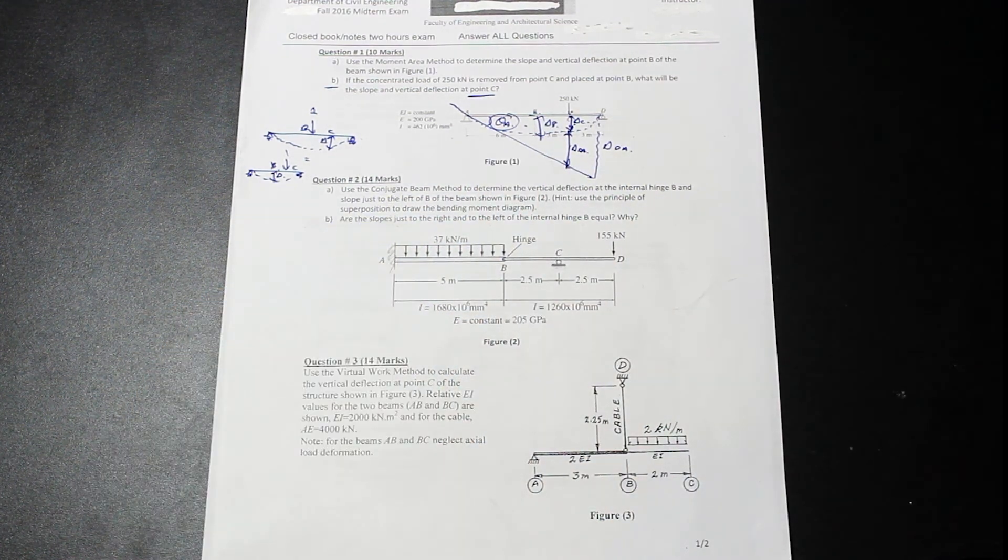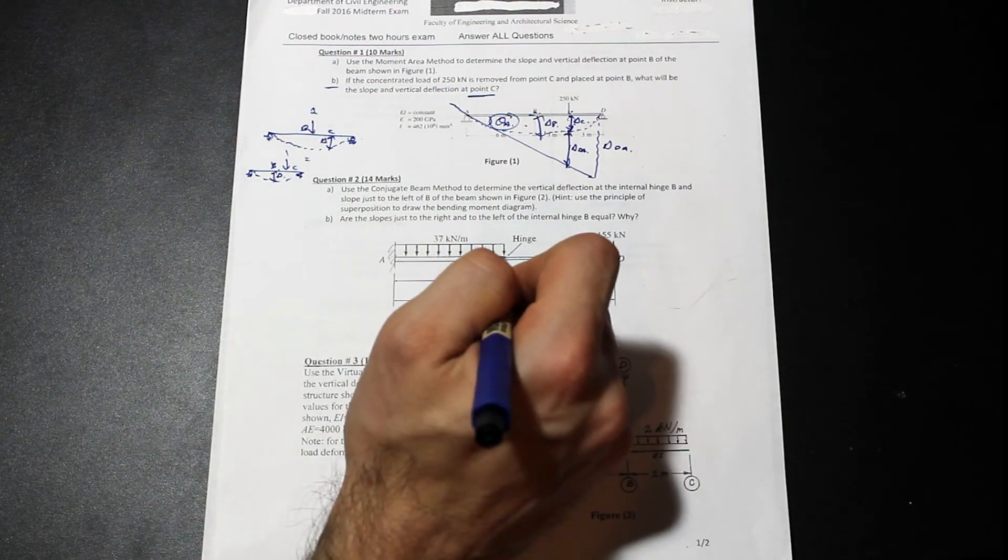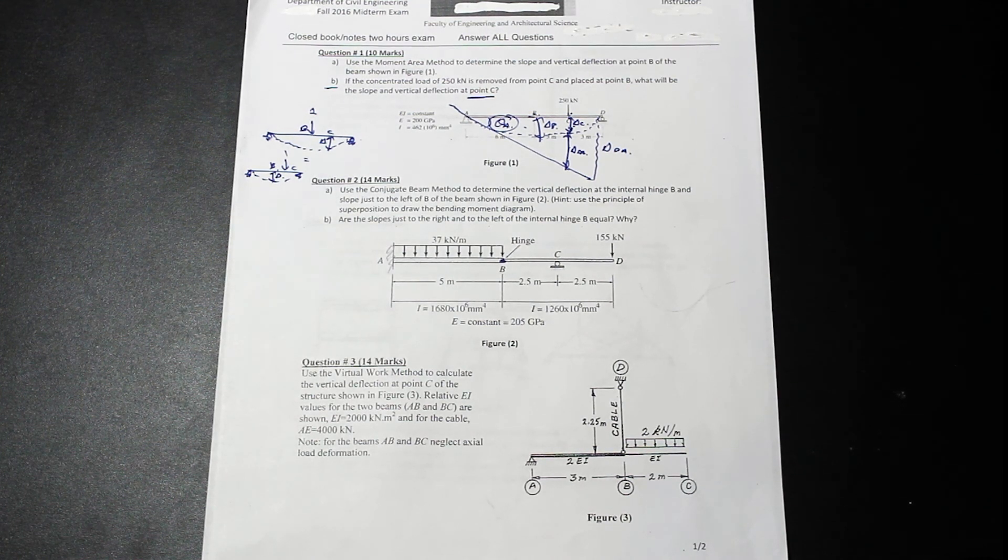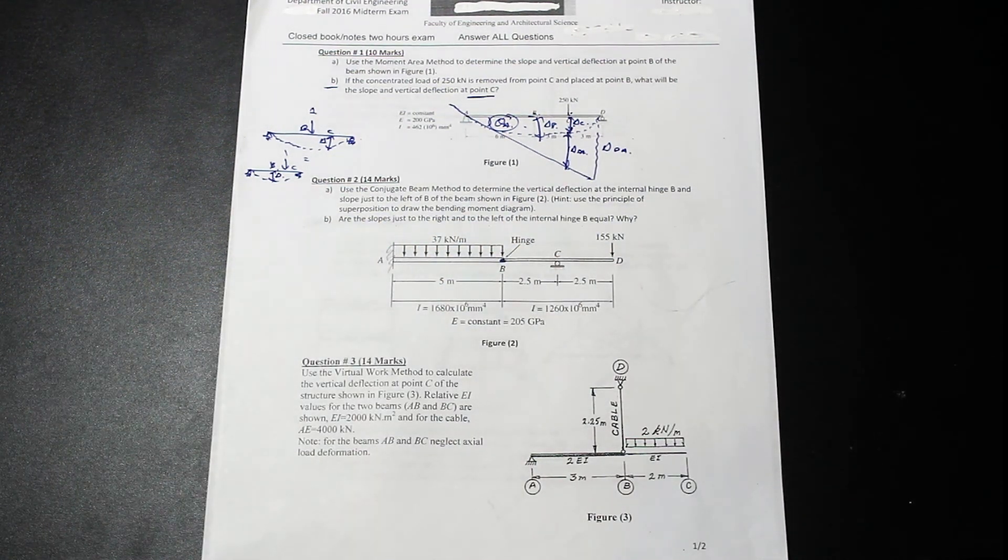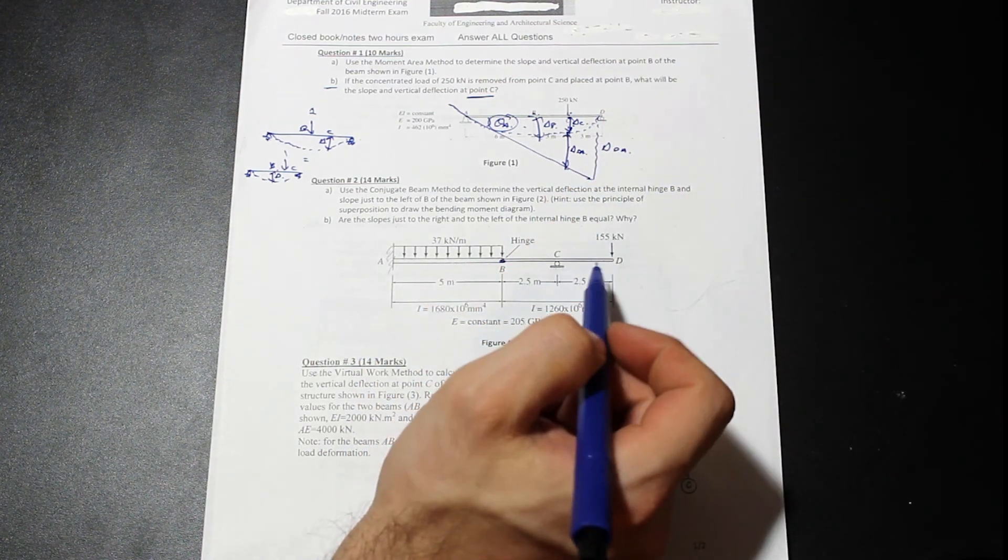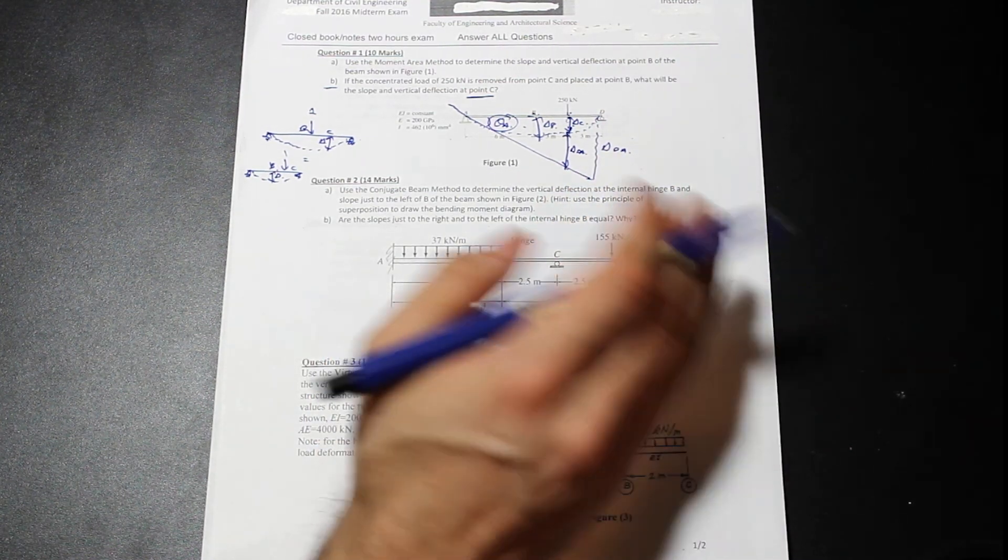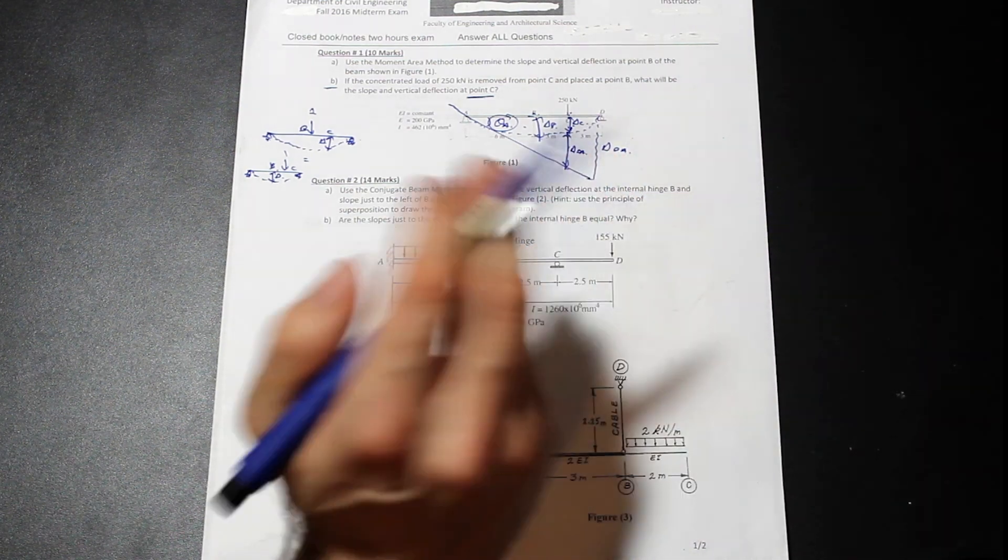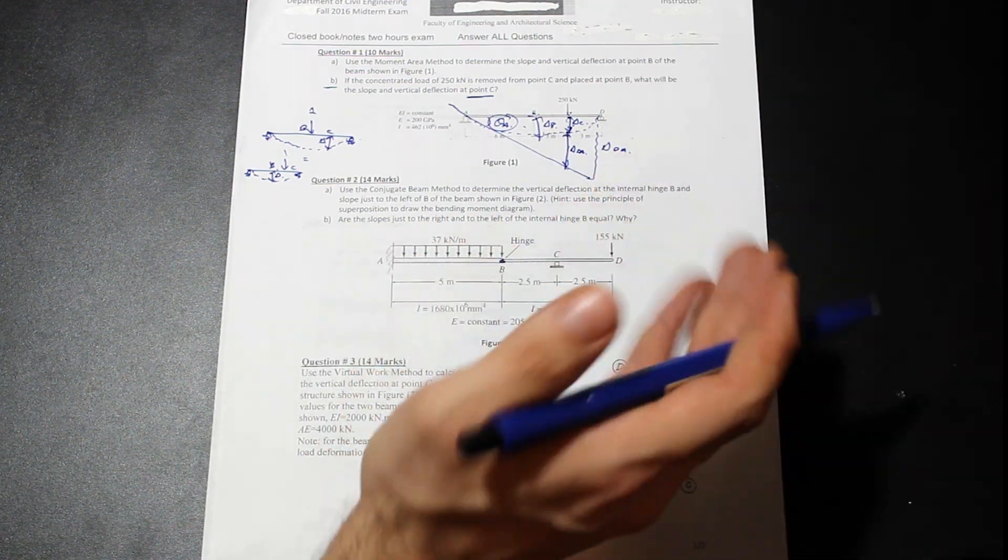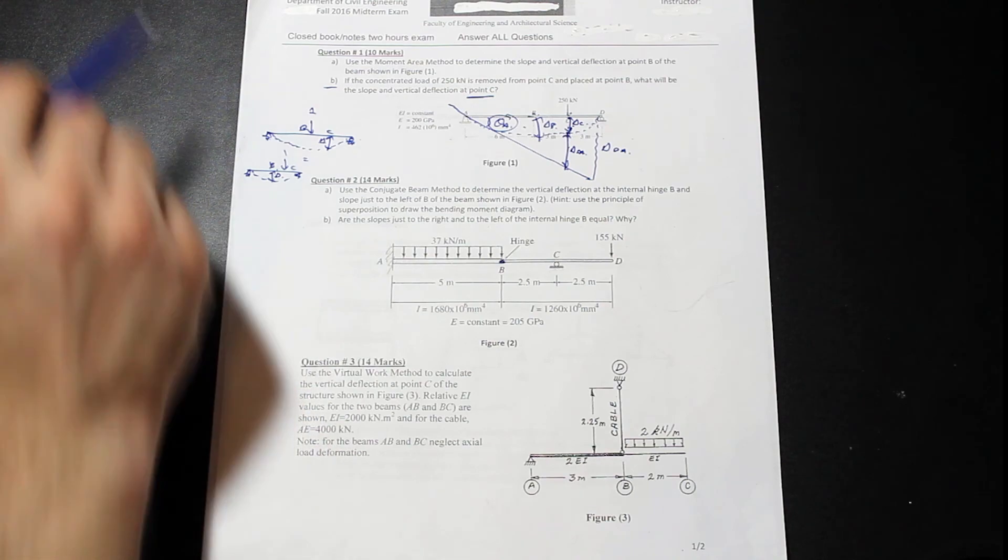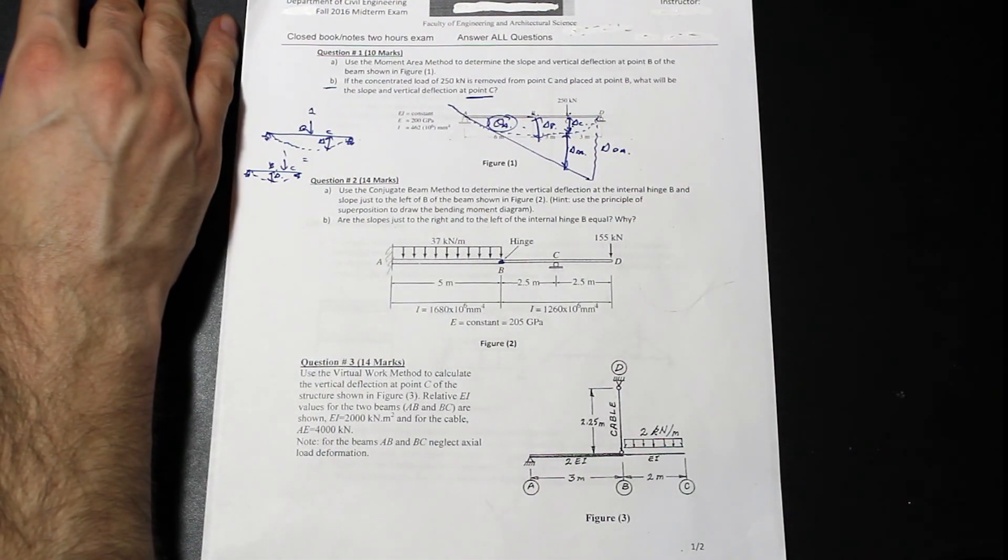So let's move on to the next question. And we're asked to use the conjugate beam method to determine the vertical deflection at the internal hinge B. So we're asked to find the vertical deflection here and the slope just to the left of B. And yeah, that's telling us to use the principle of superposition. You didn't need to do that. That's fine. That was just kind of like a trick if you were good at that, but I found that to be more difficult than just drawing the bending moment diagram. The conjugate beam method essentially is we want to create the conjugate beam. So there's a table in the book and I'll link you to the video down below so you can check it out and you replace kind of each restraint with another restraint. And then we call that the conjugate beam.